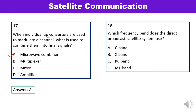Question 18: Which frequency band does the direct broadcast satellite (DBS) system use? The DBS system uses the KU band. The KU band frequency range is 14 to 14.5 GHz for uplink and approximately 10.15 to 12.75 GHz for downlink. Answer C is correct.